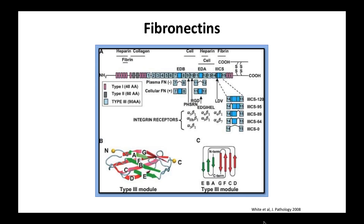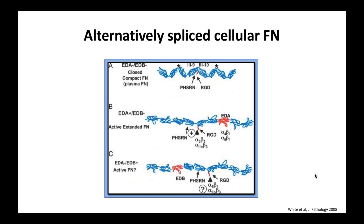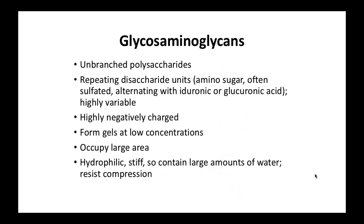Fibronectin has really multiple domains — different kinds of modules — with binding domains for heparin, collagen, cells, and fibrin. It's a very complex and multifunctional protein.